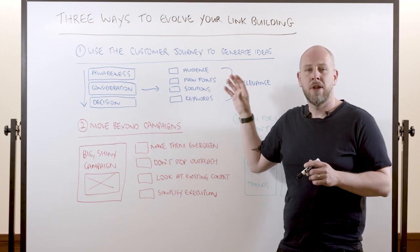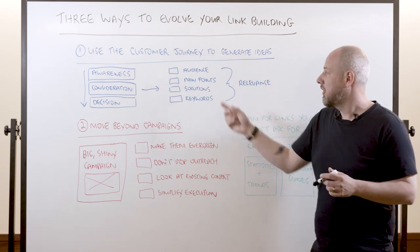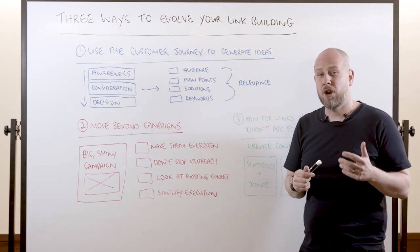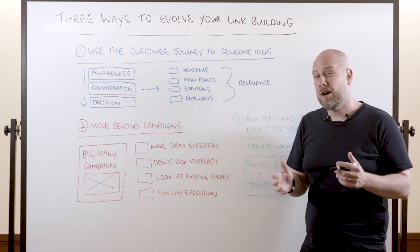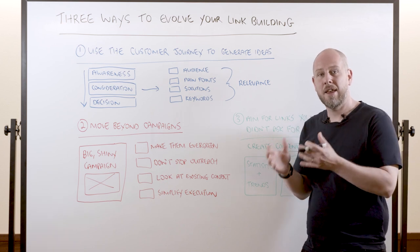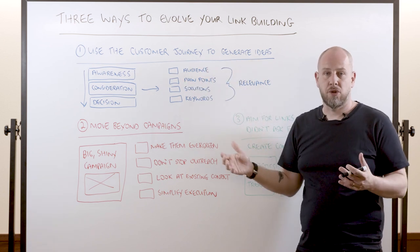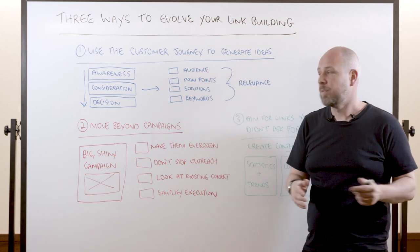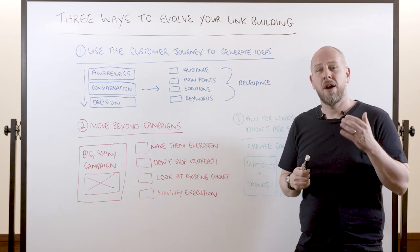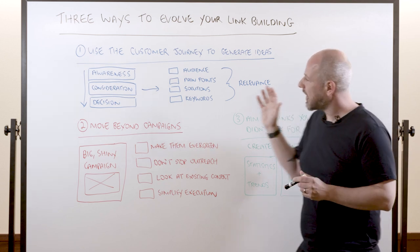The nice thing about using these four areas to come up with content ideas for link building is that it forces relevance. It's really hard to do if you stray too far away from it. What you're trying to do is strike a balance between ideas that can get links but also content ideas that are relevant to your audience and who you're trying to sell your products or services to.